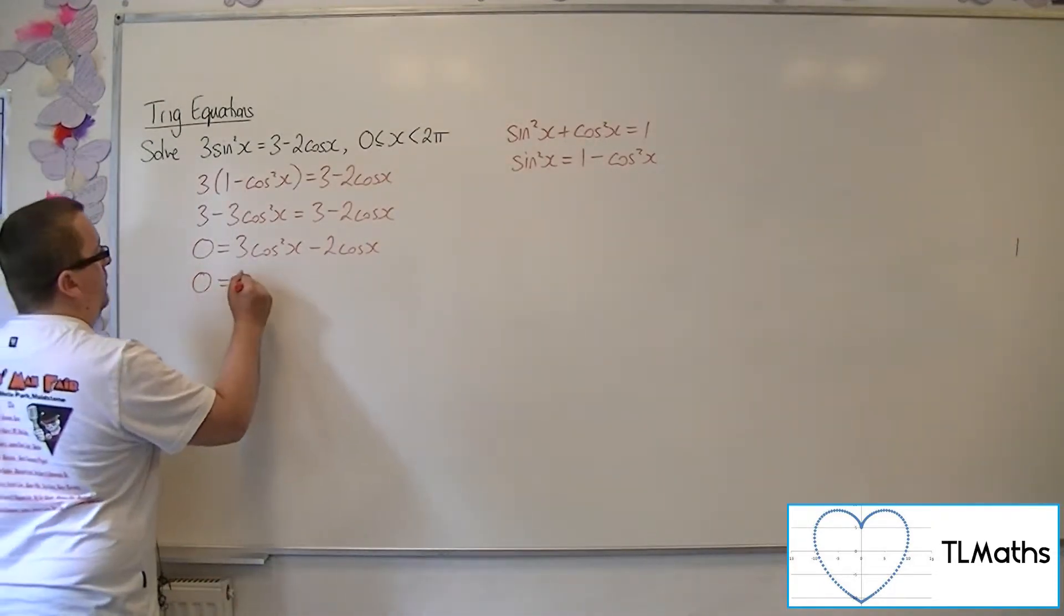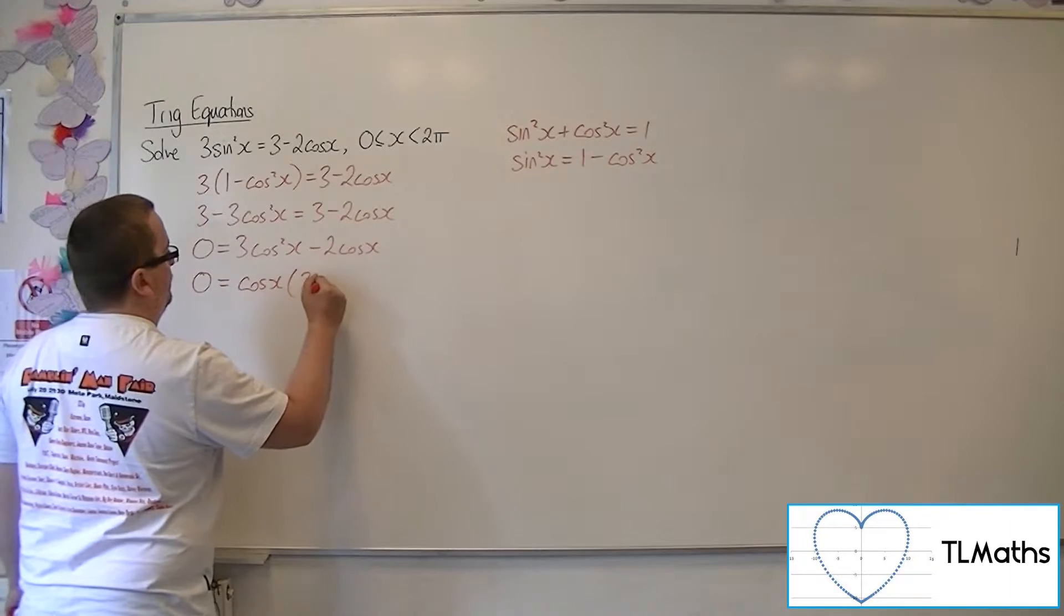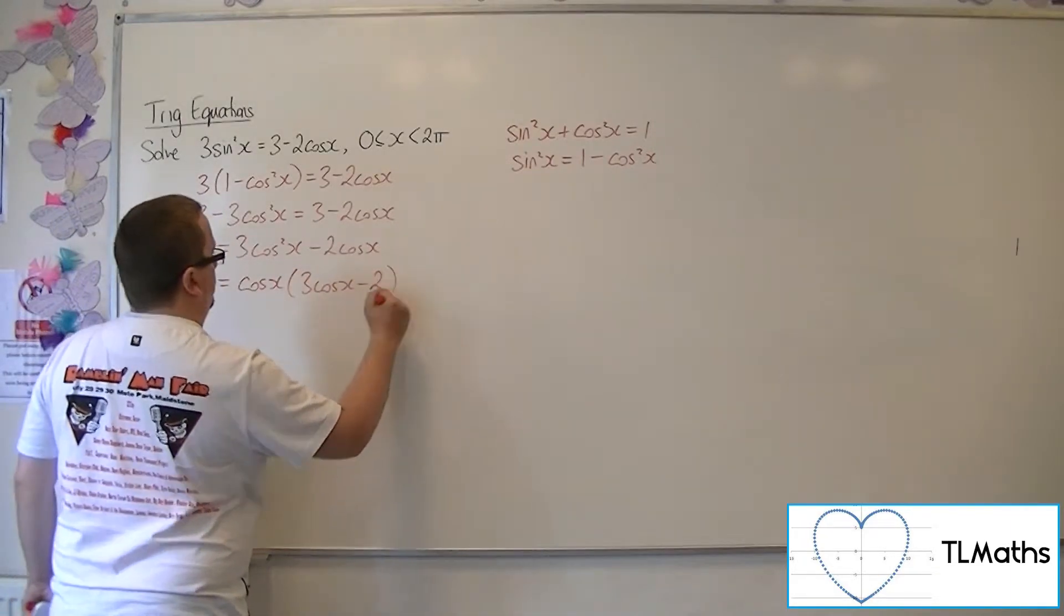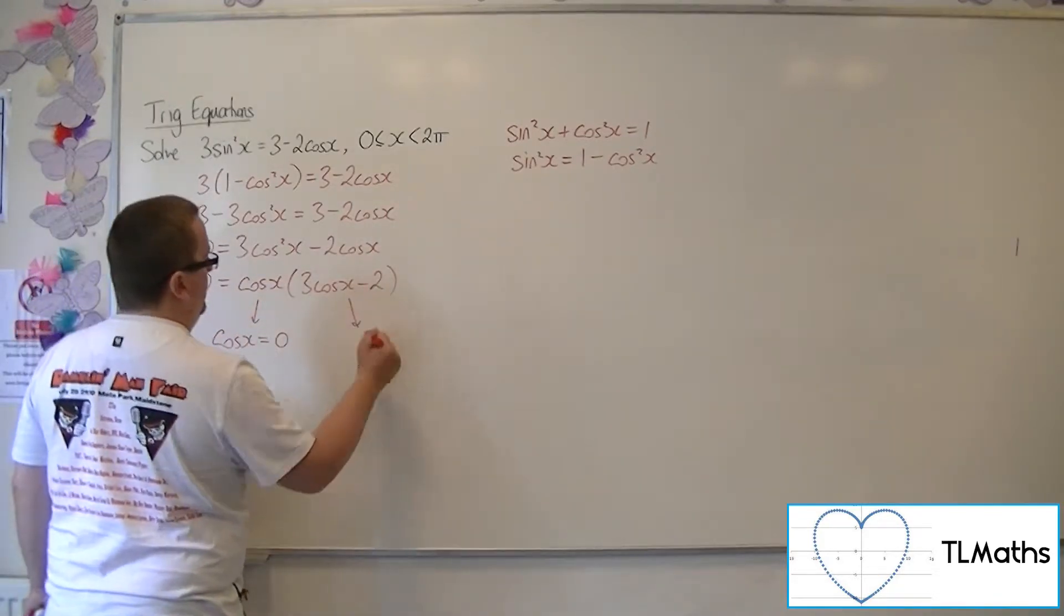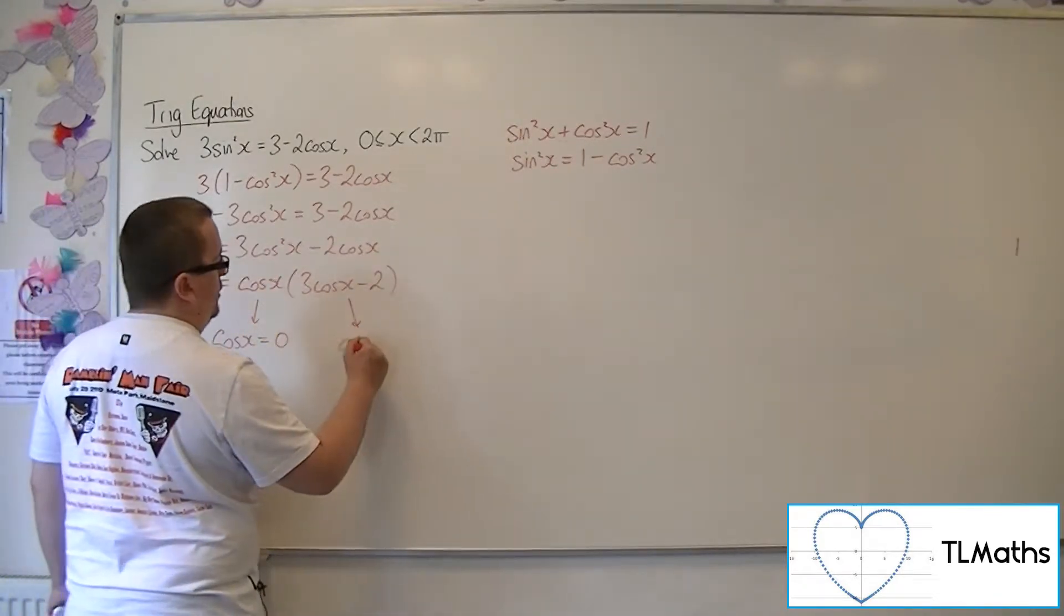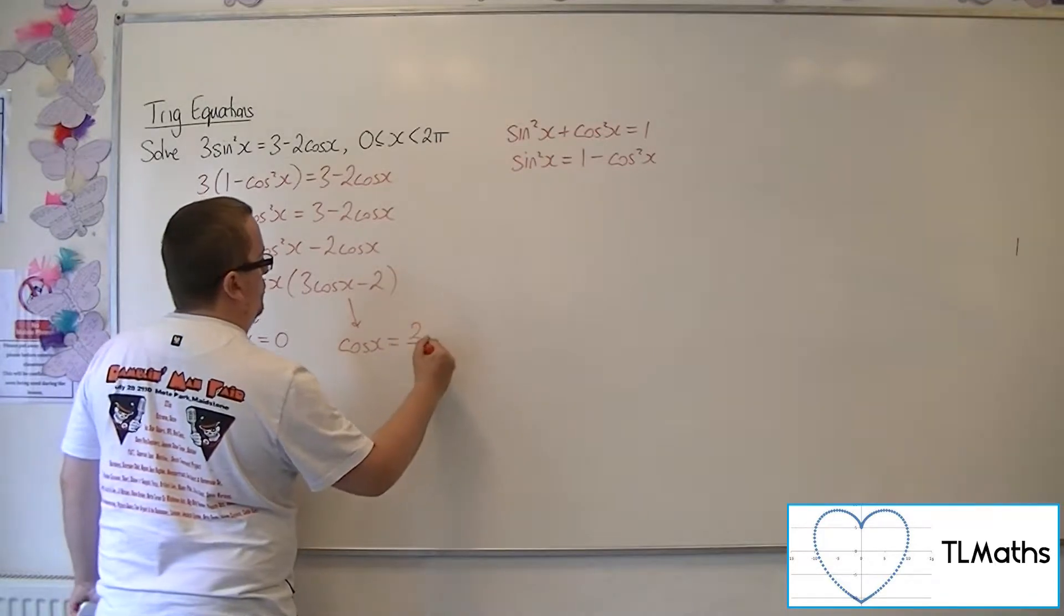Which is perfect because this factorises. So you can factor out a cosine. So either cosine x will be 0 from that or from this bracket that cos x is 2 thirds.